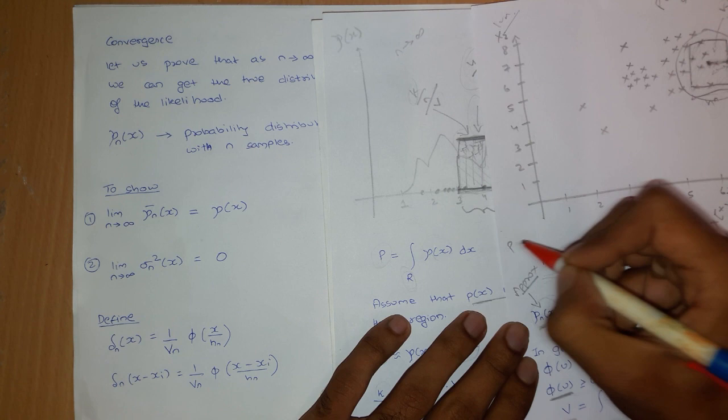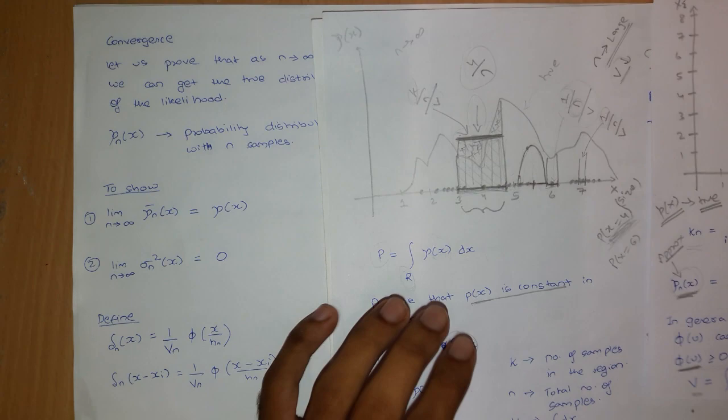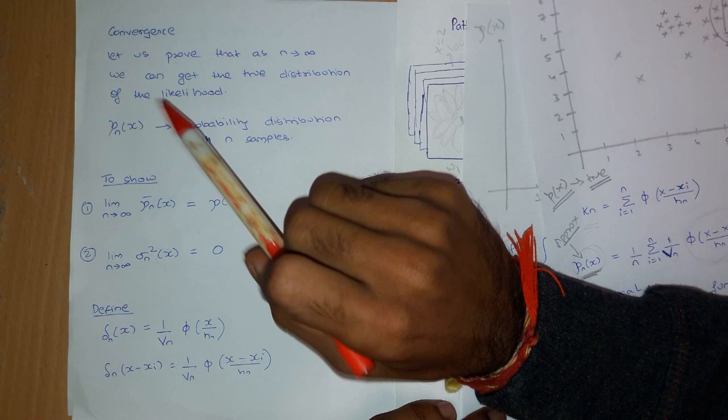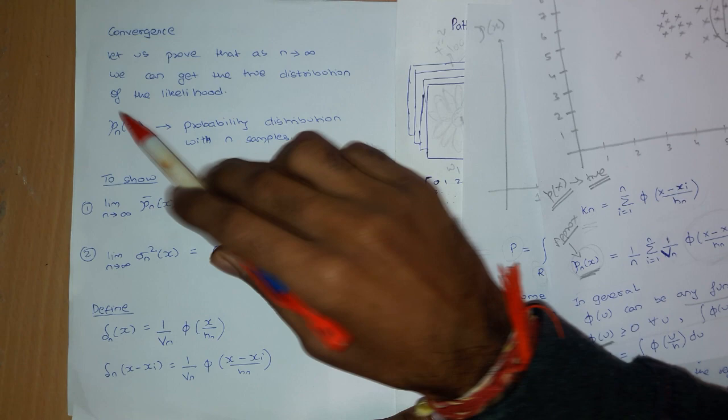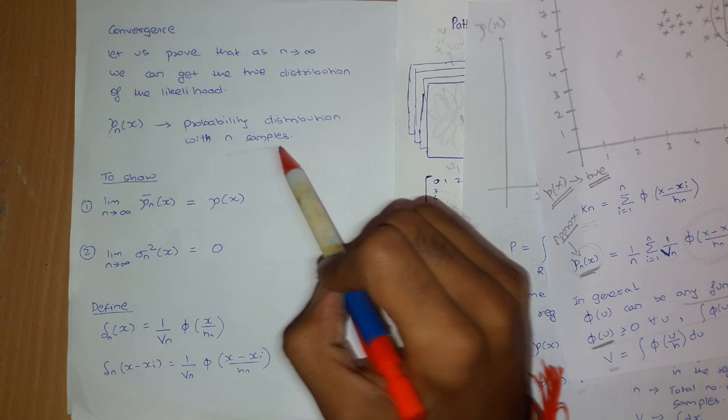I'm also going to talk about p of x — where there is no subscript n — and this is the true density. What we want to show is that as n tends to infinity, we can get the true distribution of the likelihood. And p_n of x is the probability distribution with n samples.